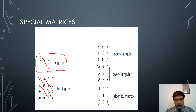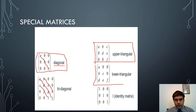The upper triangular matrix has all elements in the diagonal and above it as non-zero, and all other elements as zero. Similarly, in the lower triangular matrix, the diagonal elements and the elements below the diagonal are non-zero, and all other elements are zero.